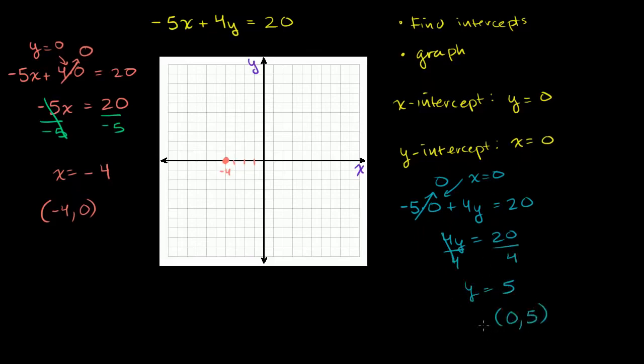So the point 0, 5 is on the graph for this line. So 0, 5, 0, x is 0, and y is 1, 2, 3, 4, 5. Right over there. And notice, when x is 0, we're right on the y-axis. This is our y-intercept, right over there.